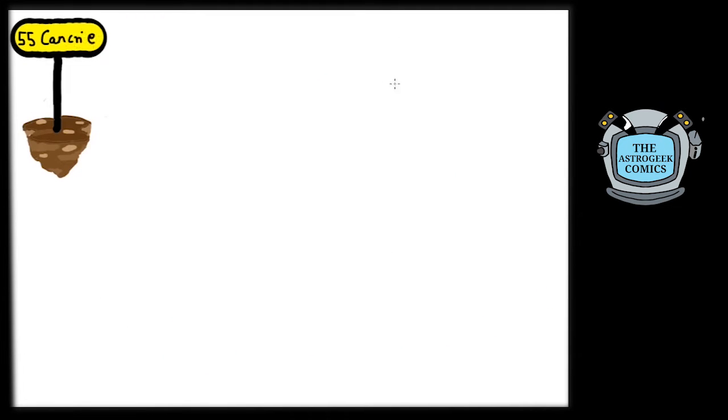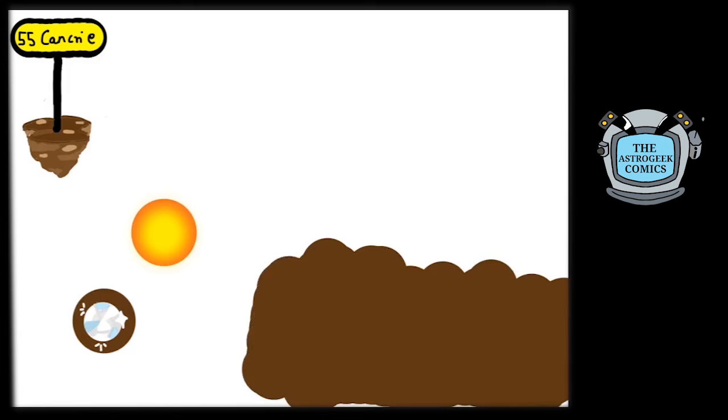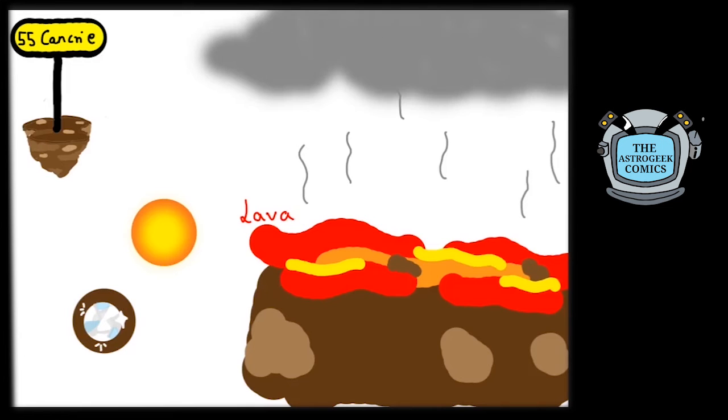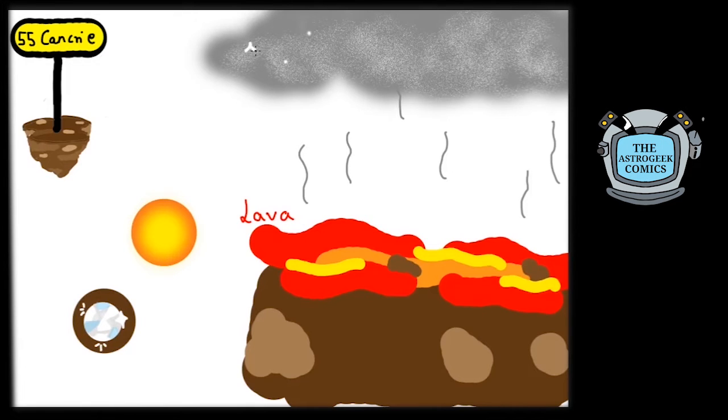The first planet we will visit is 55 Cancri E, a world that is thought to have a diamond core. But before you rush here, know that this world is so close to its star that the whole rocky surface is converted into lava. The silicates from the ash have formed clouds that sparkle like glitter over the lava-covered world.